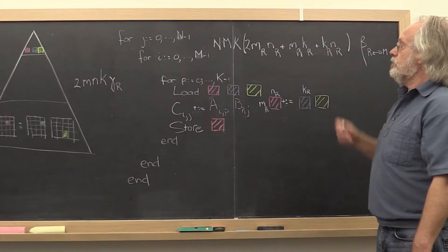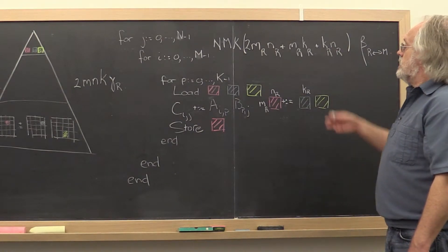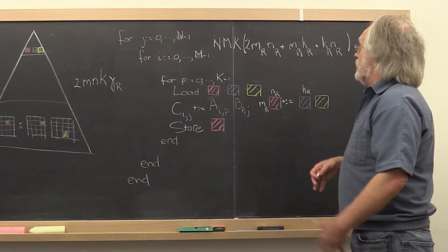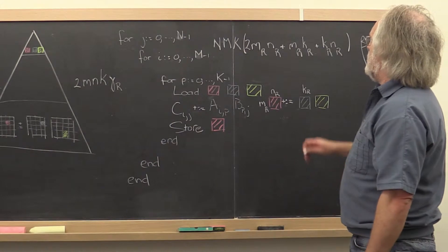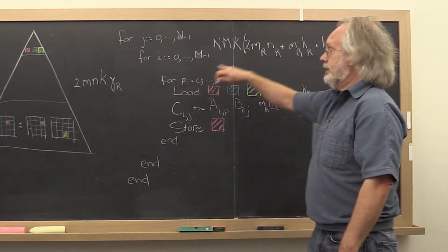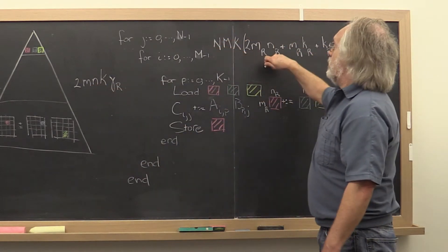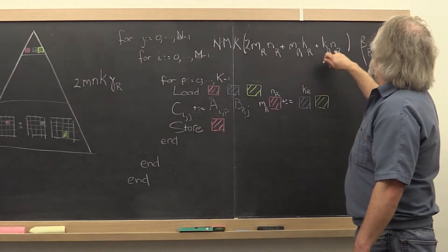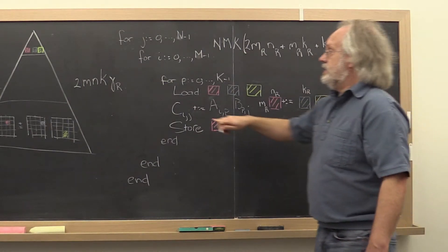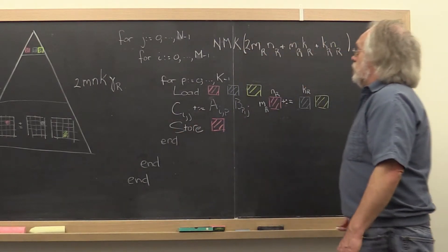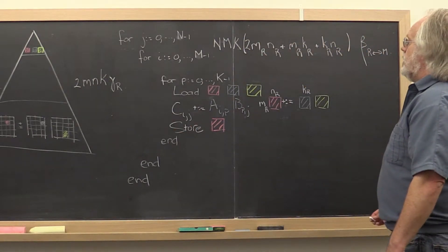So we now have this formula that tells us how much memory movement happens or how much time is being spent in moving data around. And we could simplify this by realizing that big M times mr is just little n. Big N times mr is just little n. And big K times kr is just little k. It's the total size of the matrix. So what kind of simplification can we get here?